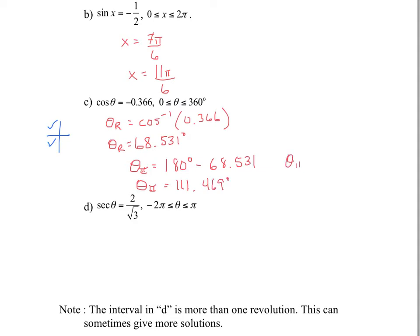Your angle in the third quadrant is 180 degrees plus your angle of reference, 68.531, which equals 248.531 degrees. Those would be your two solutions. If you typed in cos of these angles, you should get about negative 0.366. Notice that if your question asks for degrees, make sure your calculator is in degrees — if you got a weird answer, it might be in radians instead.